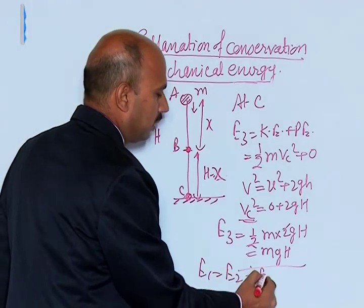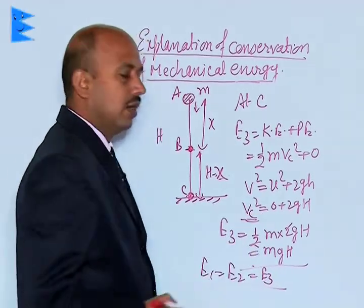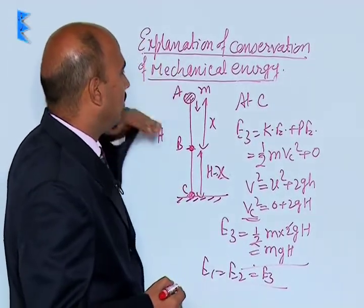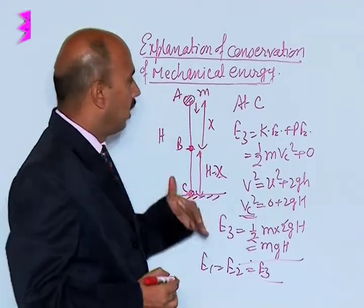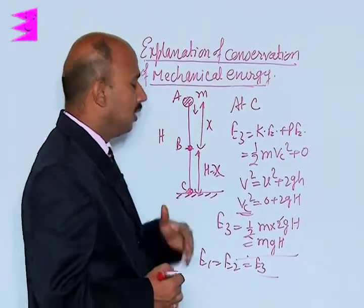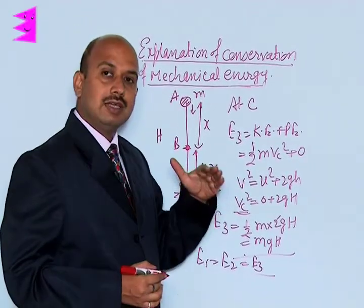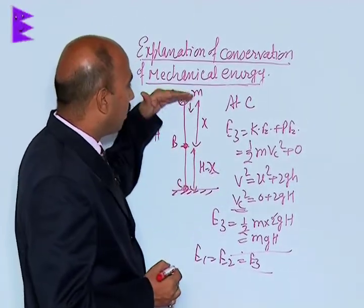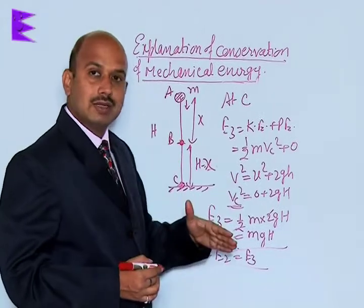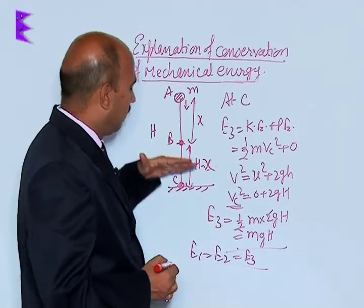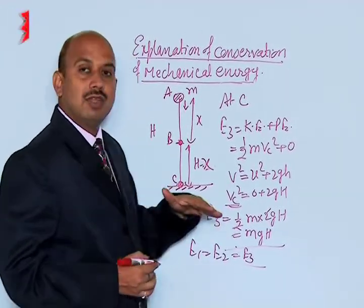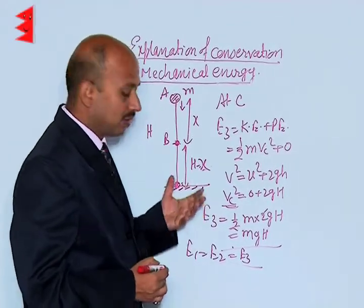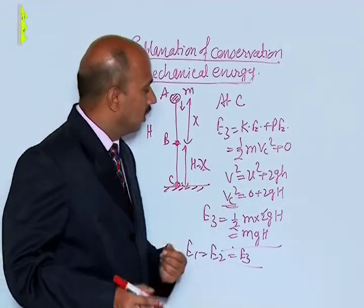We have found E1, E2, and E3 — in all three cases the energy remains the same. So E1 equals E2 equals E3. When the body is at A it has only potential energy, kinetic energy is 0. As the body moves to B, kinetic energy is gained while some potential energy converts to kinetic energy. When the body reaches C, potential energy reduces to 0 and all potential energy has been converted into kinetic energy.